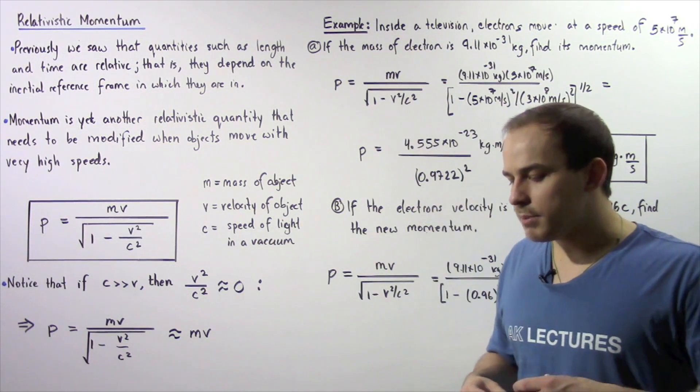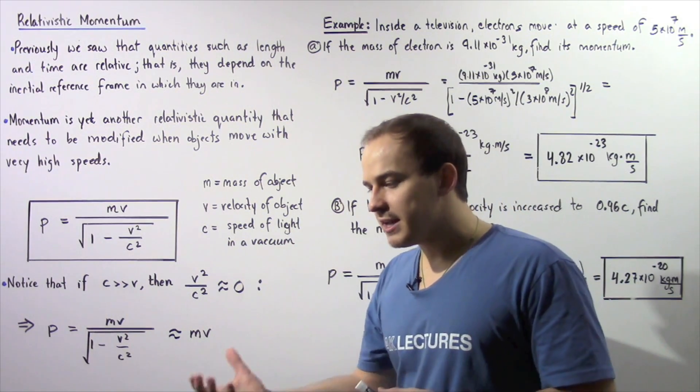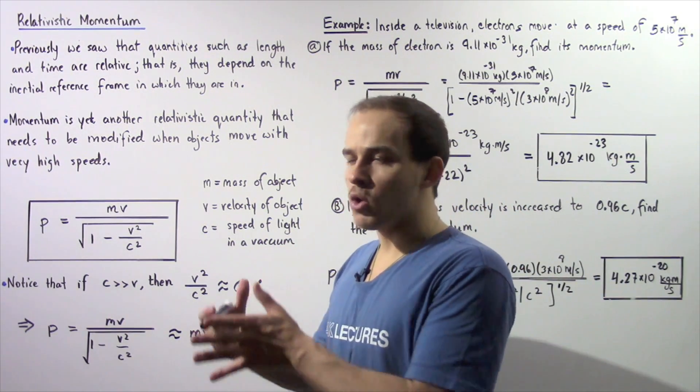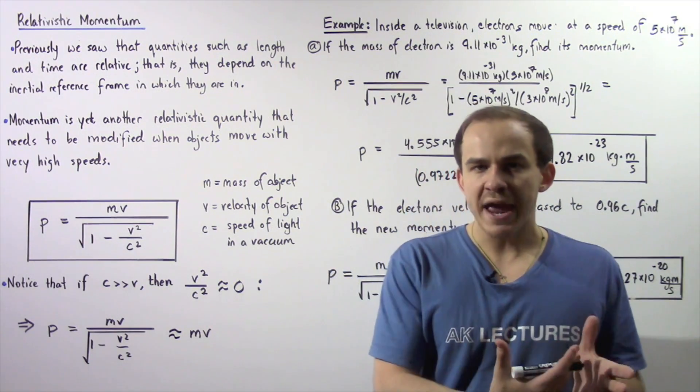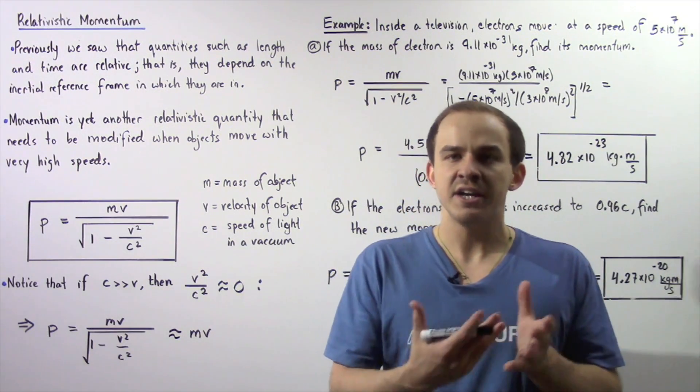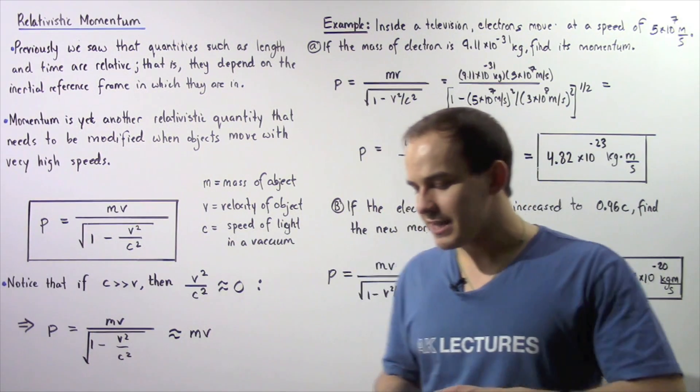For example, if we have a stationary inertial reference frame, let's suppose the Earth, and we have a moving reference frame, let's suppose a spaceship that is moving with some very high constant velocity.